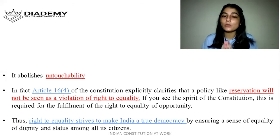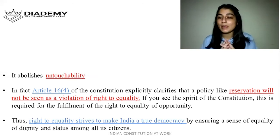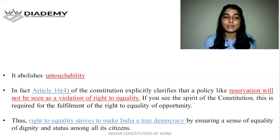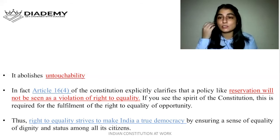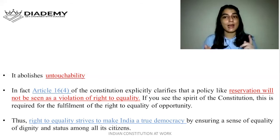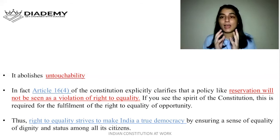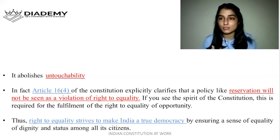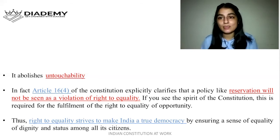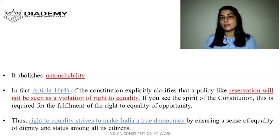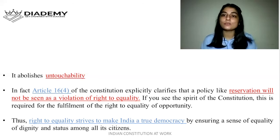Right to equality strives to make India a true democracy by ensuring a sense of equality, dignity, and status among all its citizens. To summarize: Article 14 — the state shall not deny equality before law and equal protection of laws. Article 15 — everybody can access public places and there shall be no discrimination. Article 16 — no discrimination in public employment. Article 17 — abolishes untouchability. Article 18 — the state shall confer no title.